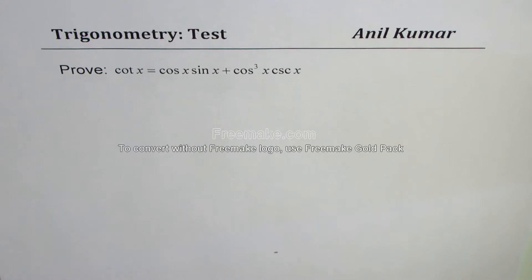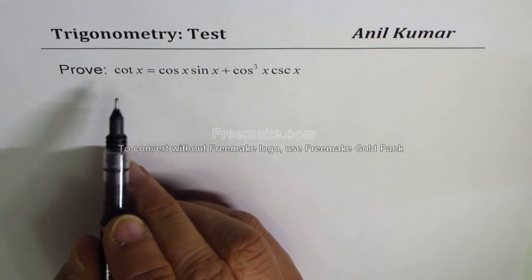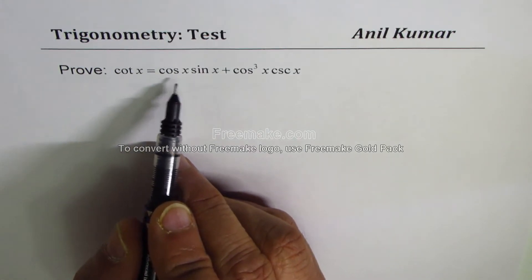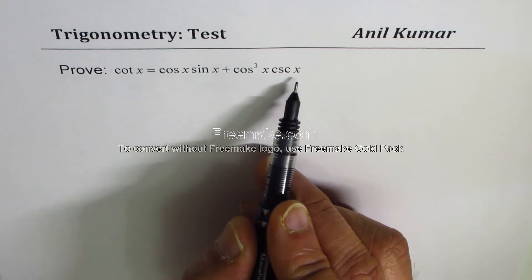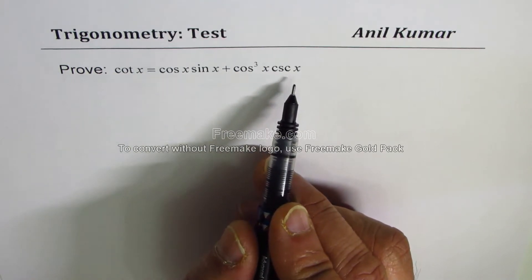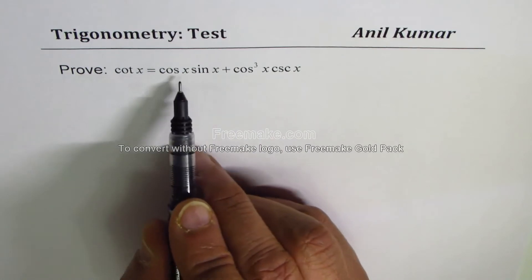I'm Anil Kumar sharing with you a test question on trigonometric identities. We need to prove that cot x equals cos x sin x plus cos³ x csc x.